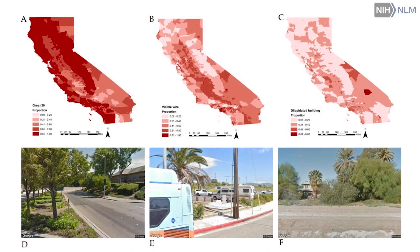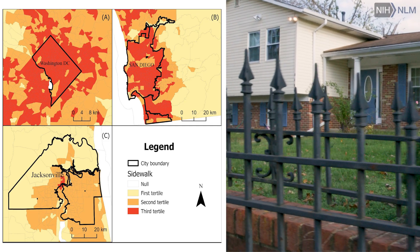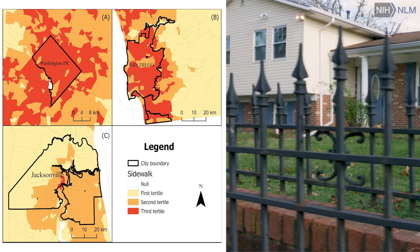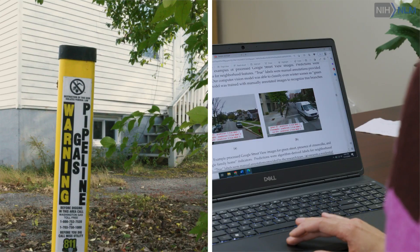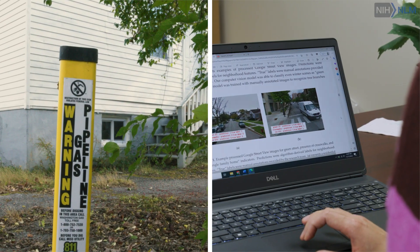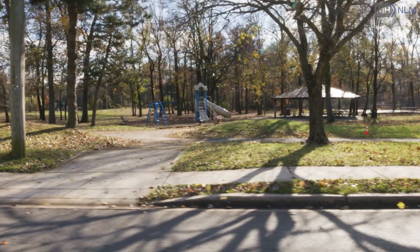In our pilot study, we merged those indicators with patient data in Utah — it was close to a million patient records. Healthcare systems want to know what are some exposures that their patients encounter, and what are some of the predictors that can help them better understand where chronic disease risk is coming from.